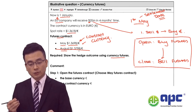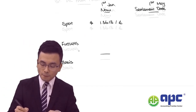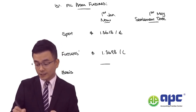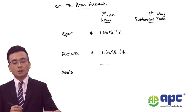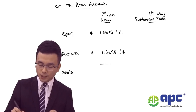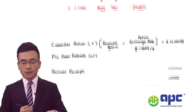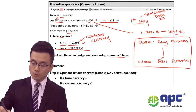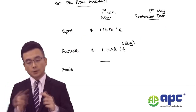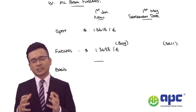We enter into the futures contract at 1.3698. Because this is the first deal — we open a deal — we need to buy the futures, as I said before, we need to buy the Euro. When we close out the deal later on, we need to sell it on the settlement date. So let's calculate the basis.